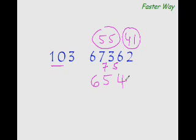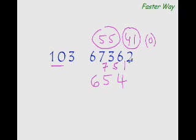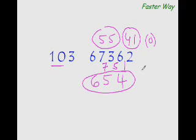The remainder is 1. Our new dividend would be 12 minus 3 times 4, which is again 12. So 12 minus 12 is 0. The moment you have 0 as the dividend, you know that 654 is your answer. That's it — as simple as that.